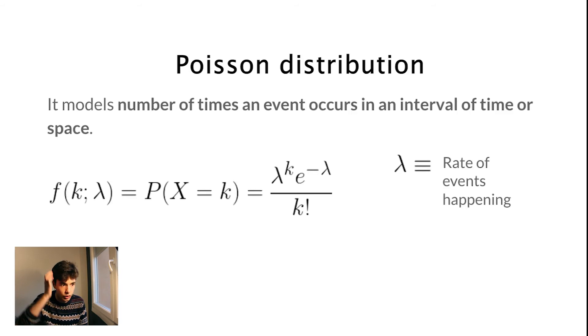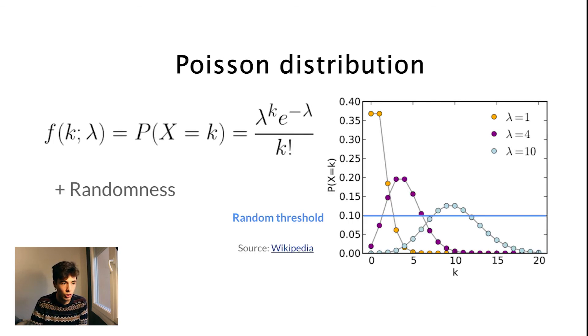We can do that with a Poisson distribution, given that it models the number of times that an event occurs in a given interval of time or space. And then we can set a threshold, so that when a probability is greater than the threshold, we can make a neuron spike. So let's now try to implement this in Python.